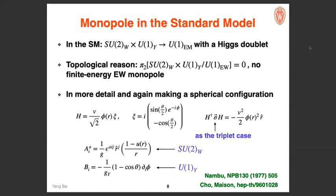We proceed with the SU(2)_W gauge bosons as before. But there is one more thing about the hypercharge: the choice of U(1)_Y must ensure that far from the monopole the unbroken gauge group is the electromagnetic U(1), which gives a specific form for the hypercharge B-field.